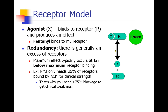Usually you can get your maximum effect long before all the receptors are saturated. For example, the neuromuscular junction only needs about 25% of its receptors bound by acetylcholine for you to have strength. That's why you need more than 75% of your receptors blocked before you start to get weak — because your body has redundancy, so you don't need every receptor to have full strength.